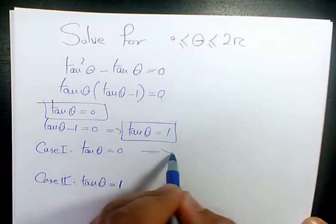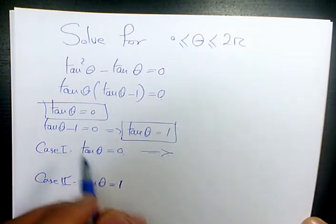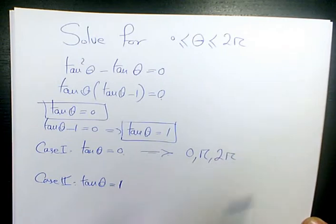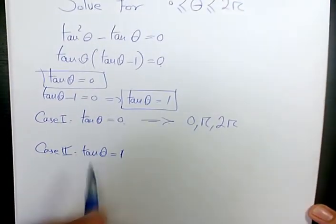Tan theta is zero when sine is zero, which is going to be zero, pi, and two pi. And tan theta equals to zero,